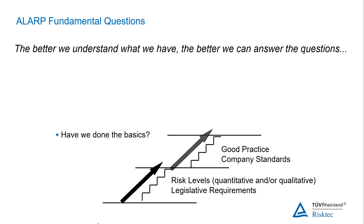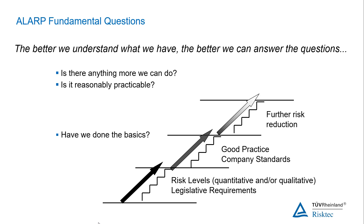Once we've got across these two hurdles, at best all we can really say is we're doing the basics — we're doing pretty much what everyone else is doing. Is this really the best we can do? Is this really what we aspire to as a company? There should always be the questions of: could I do anything more? Does it make sense to do so? There's a commonly used saying: if you always do what you always did, you'll always get what you always got. We may have successfully completed this task many times in the past, but are you absolutely certain it wasn't down to your lucky rabbit's foot? If we don't ask the question 'is there anything more we can do,' we're never going to be able to say that our risk is truly ALARP. The phrasing commonly used around this is: what more could I do, and why haven't I done it?